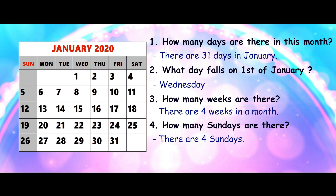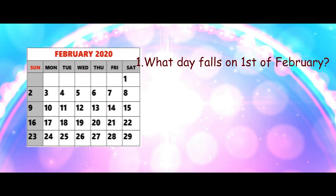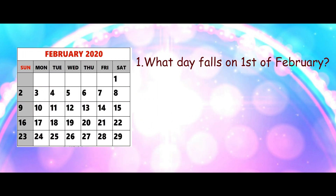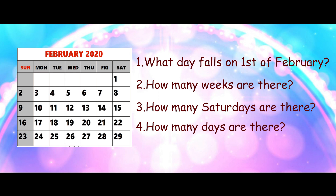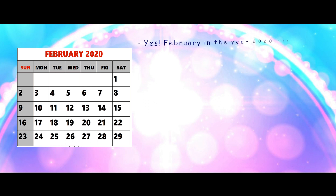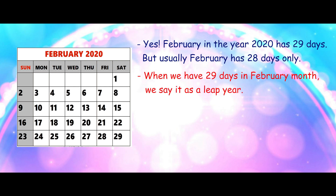Now it's your turn to look at a calendar and solve this question. Let's look at February. What day falls on 1st of February? How many weeks are there? How many Saturdays are there? How many days are there? February in the year 2020 has 29 days, but usually February has only 28 days.